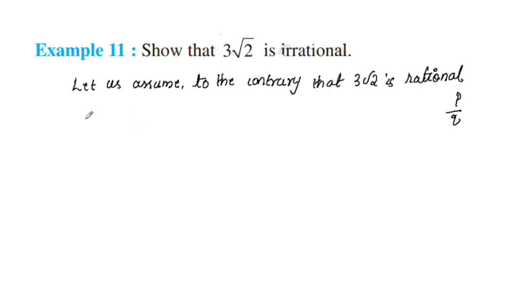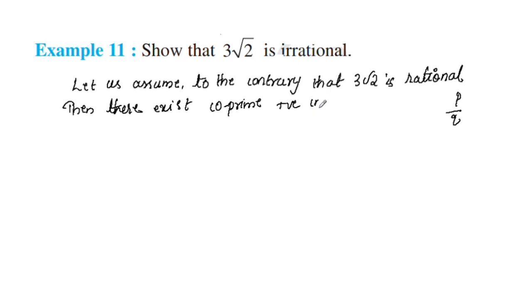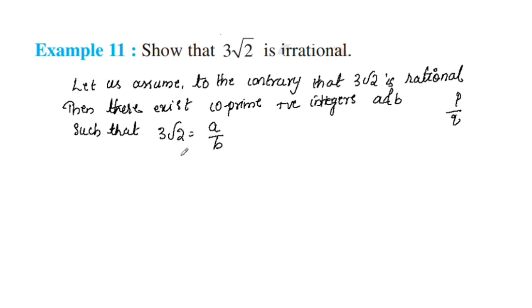Then there exist co-prime positive integers A and B such that 3√2 is equal to A/B. So √2 is equal to A divided by 3B.